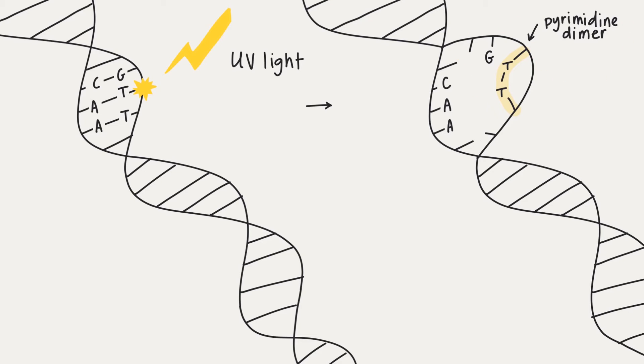We call these pyrimidine dimers, in this case it's a thymine dimer, and they're dangerous because they can cause a kink in the DNA which can stall polymerase or cause a misread.